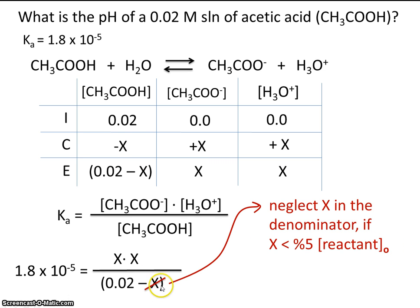So what we're going to do, we're going to get rid of x in the denominator. We'll just scratch it out. We'll rewrite it without the x in there. And then we'll solve for x. And if we solve for x, and it turns out to be less than 5% of the initial concentration, which is here, then it turns out it was okay to neglect x. And in all the problems we work this unit, it will be okay to neglect x.